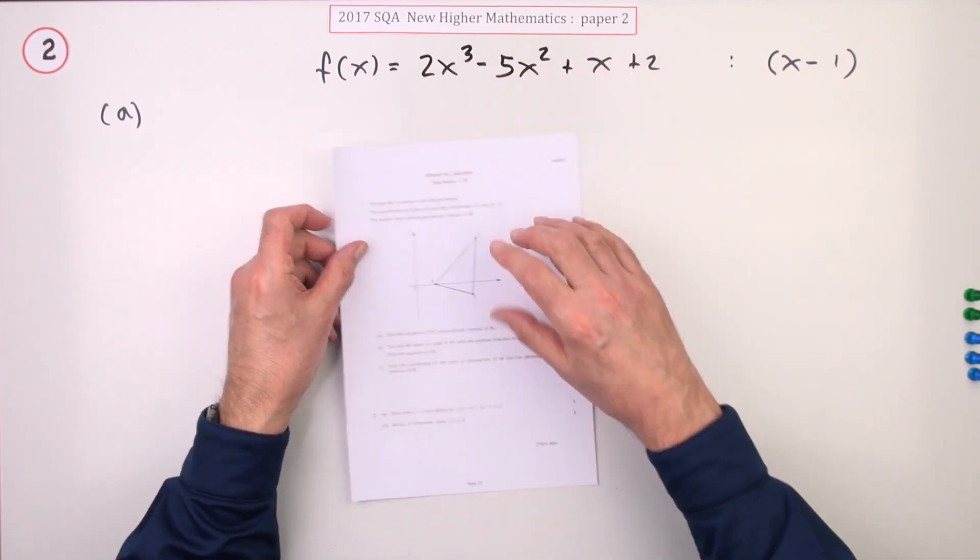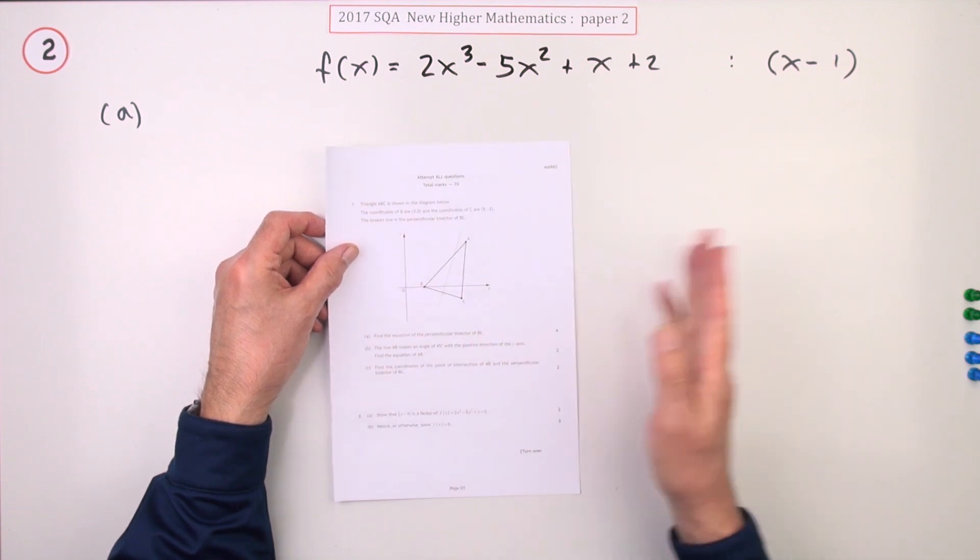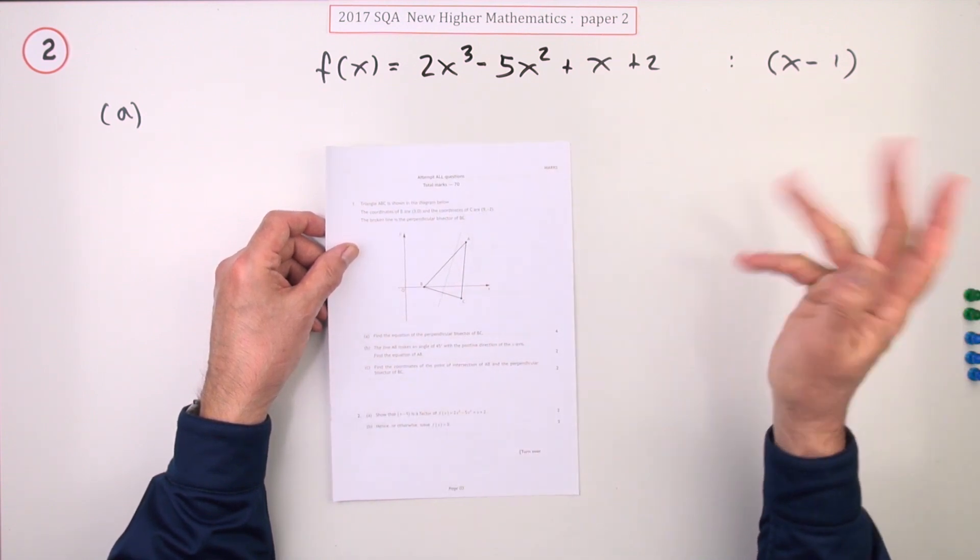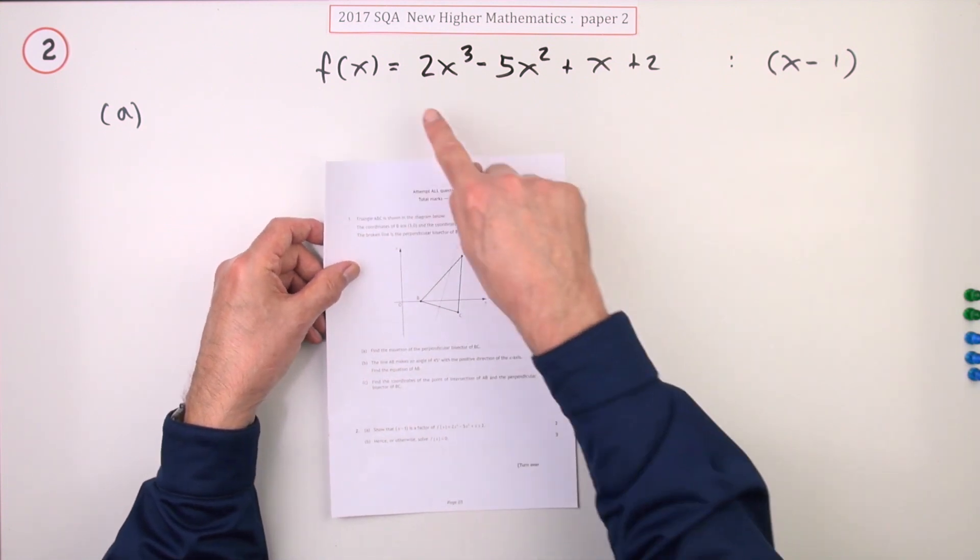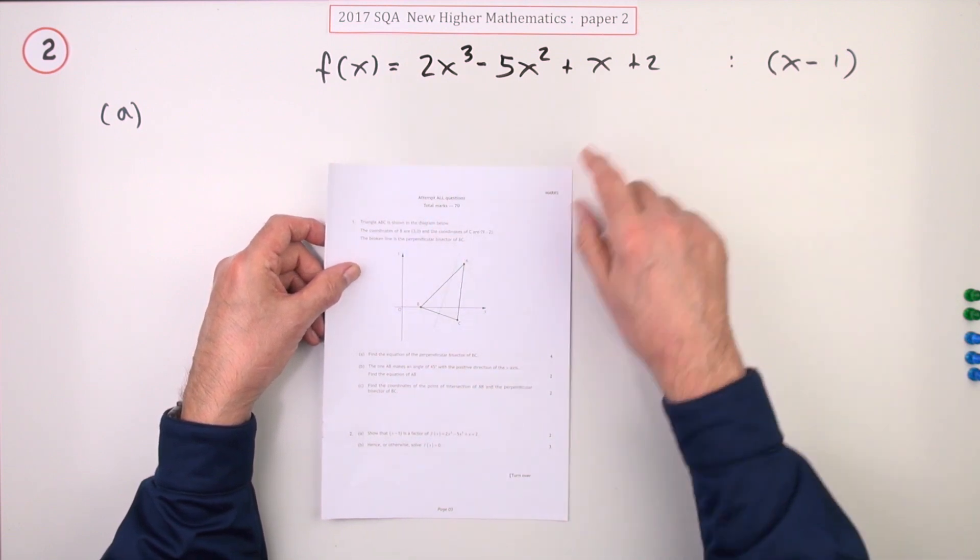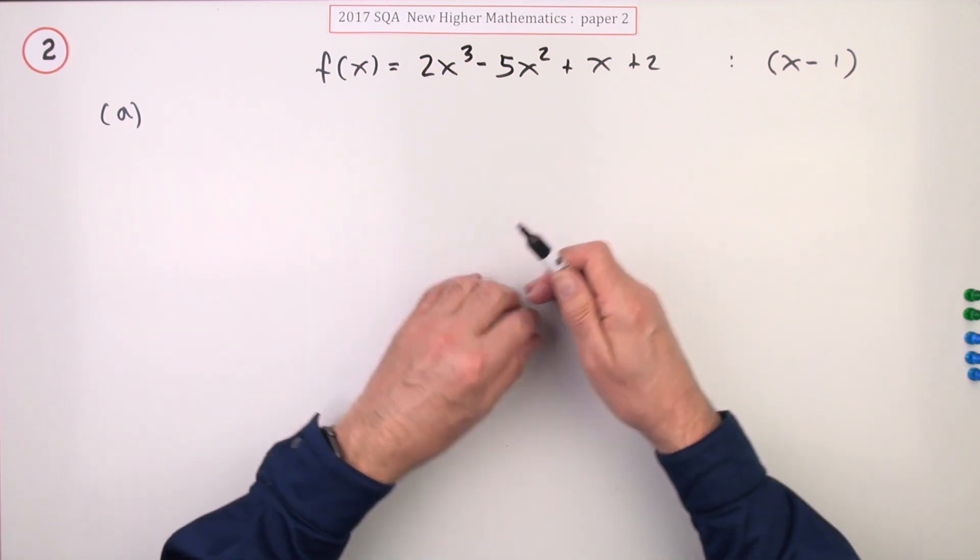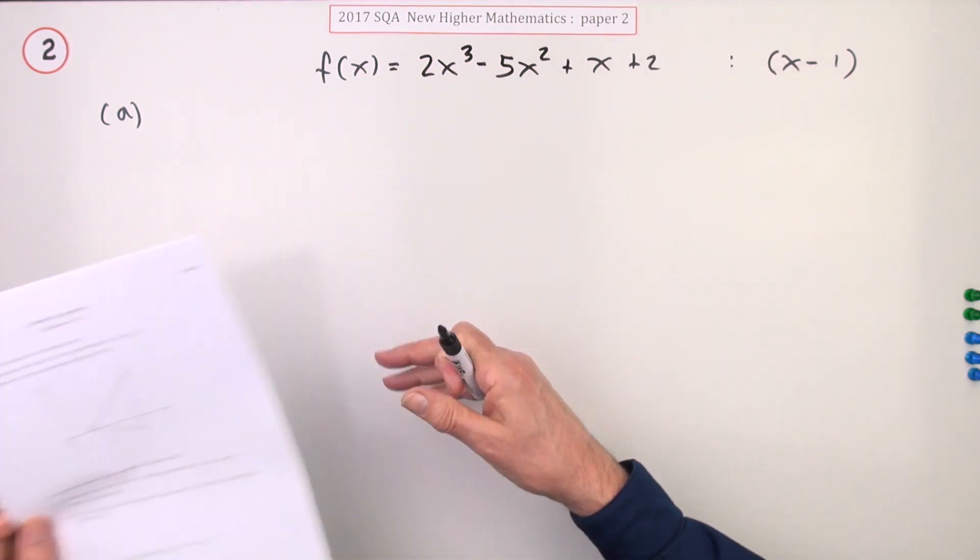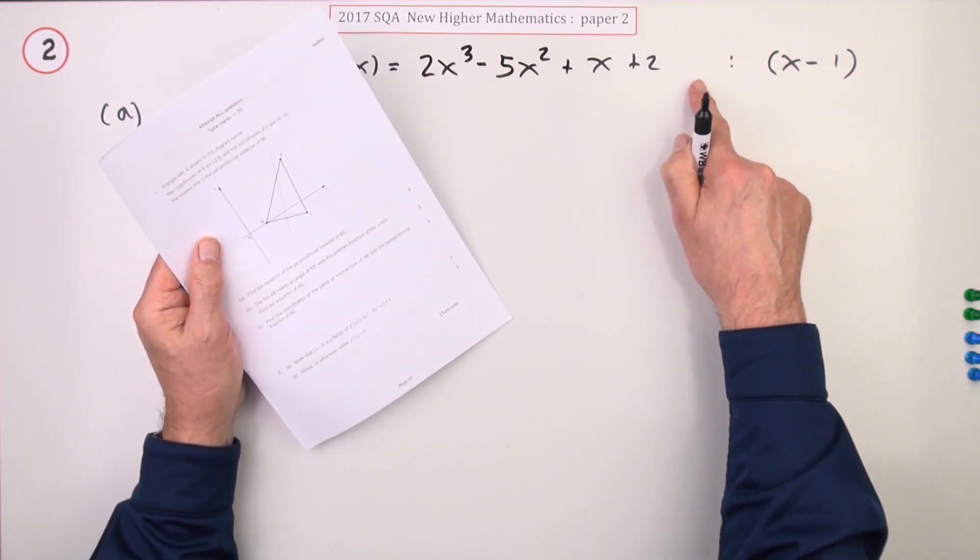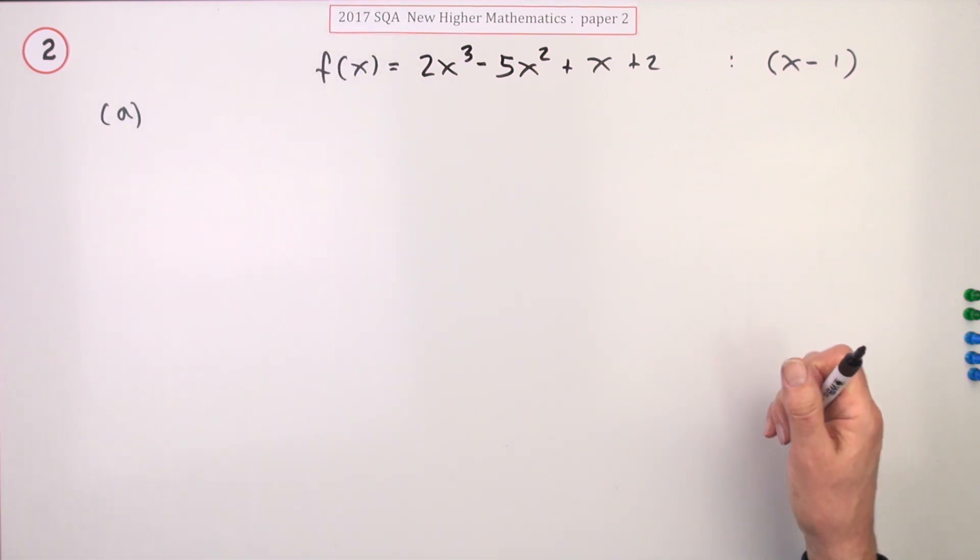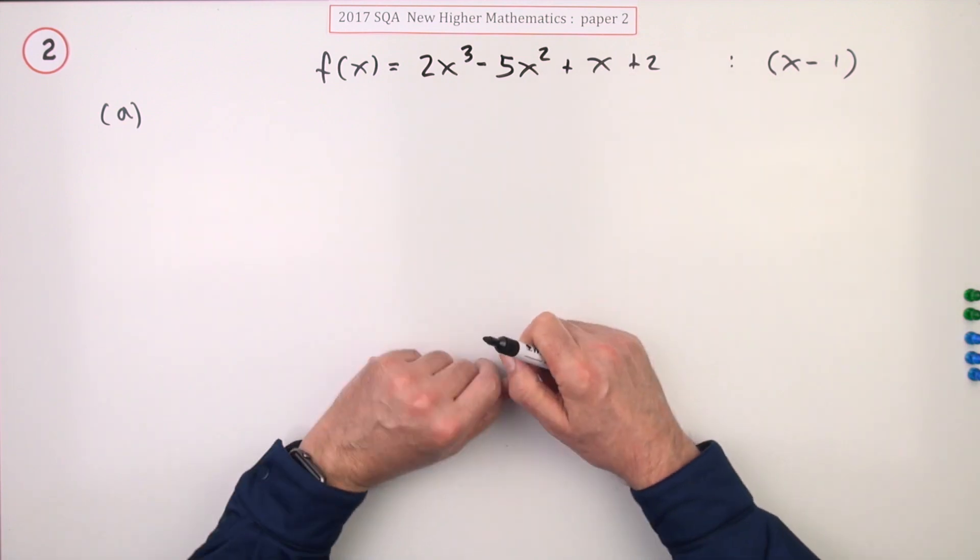Question 2 from paper 2 of the 2017 higher maths. There we go, the cubic expression, five marks here. Show that x minus 1 is a factor of this cubic expression, this polynomial of degree 3. There are several ways of going about it, but since in the following part you're then going to solve this as an equation equal to 0, that means you want to factorize it. So you may as well just use synthetic division straight away because it does both parts for you.